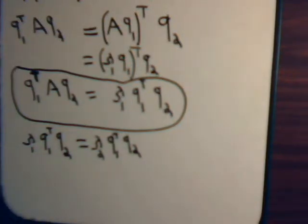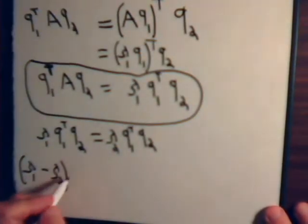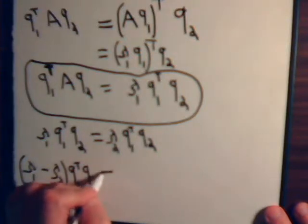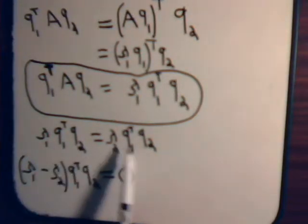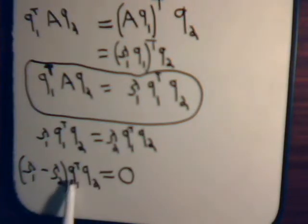Then we can write it like this, lambda 1 minus lambda 2 times Q1 transpose Q2 equals 0. Bringing this over here and subtracting. And then factoring out this. But these are not equal. These are distinct eigenvalues. So the only way this can be 0 is if this inner product is 0.